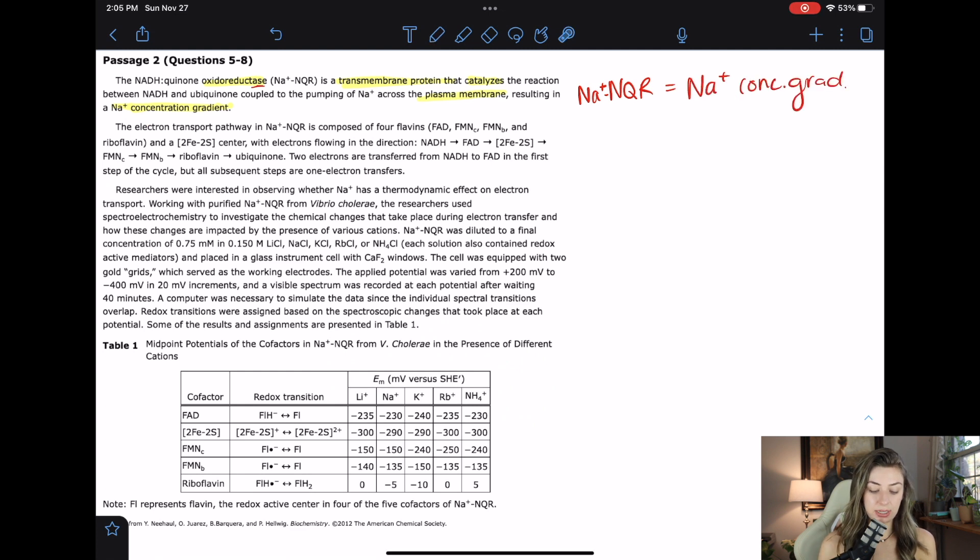Oxidoreductase, like just oxidation and reduction as reaction types. Catalyzes, so it's an enzyme and we know that because it ends in ASE. Coupled reactions. They could ask something about the plasma membrane or a sodium concentration gradient across the plasma membrane. I actually am going to write down a little bit on my flow chart here. I'm just going to say that this enzyme equals sodium concentration gradient.